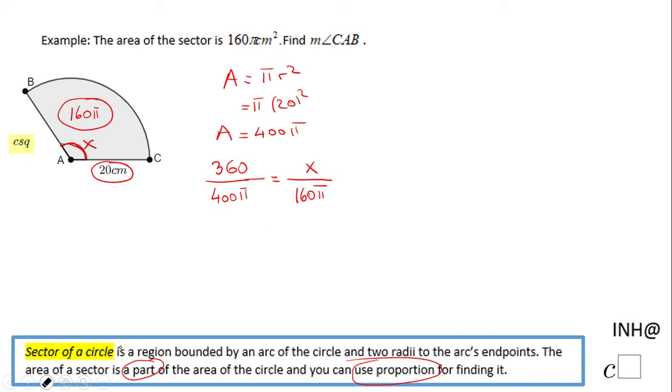Also I can do something else in this moment. I can cancel out the π's like this and I end up here with a simpler equation: 360 over 400 equals x over 160. If you want to make your life easier also you can simplify the zeros like this so we end up with 36 over 40 equals x over 160.